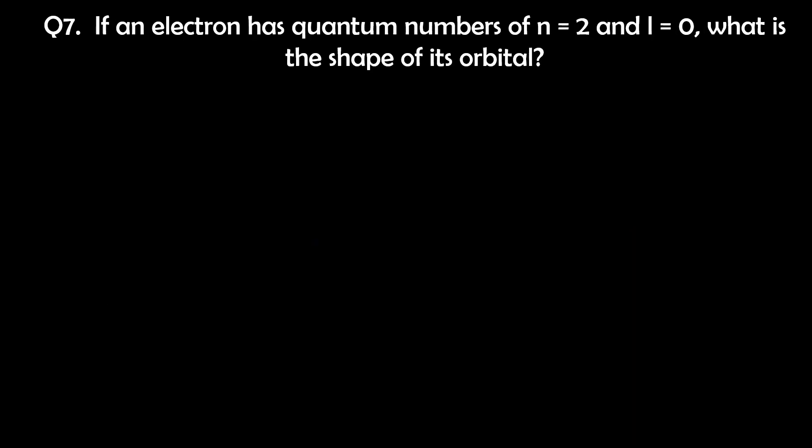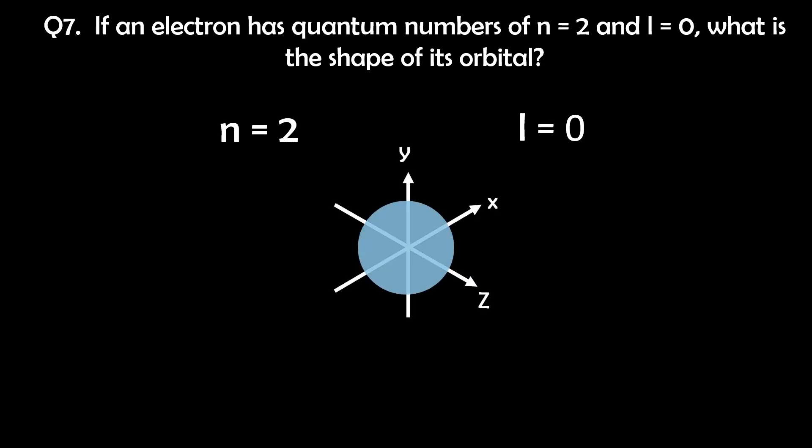Question 7. If an electron has quantum numbers of N equals 2 and L equals 0, what is the shape of its orbital? When the principal quantum number N is 2 and the angular momentum quantum number L is 0, the shape of the orbital is spherical. This corresponds to an S orbital. The L value of 0 indicates an S orbital regardless of the value of N. In this case, we are describing a 2S orbital, which is a spherical orbital in the second principal energy level.